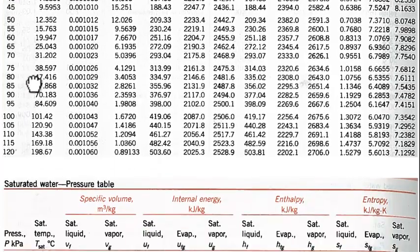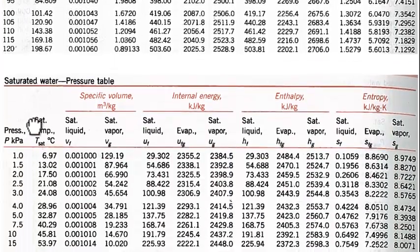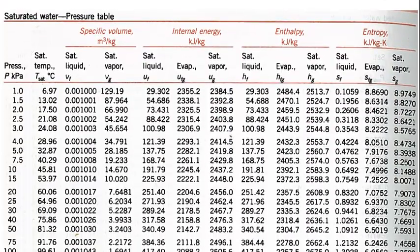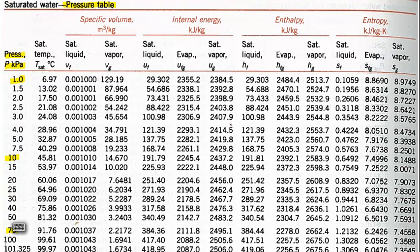The second table is the saturated water table but organized by pressure. In this case, instead of temperature in the first column, we have the pressure in kilopascal. So we've got 1 kilopascal, 10 kilopascal, 75 kilopascal, and even up to 101.3 kilopascal.